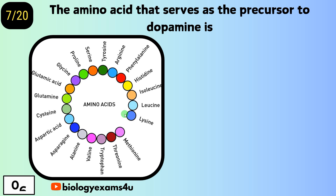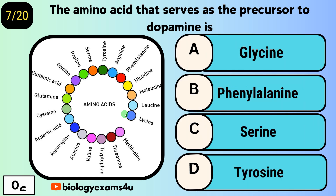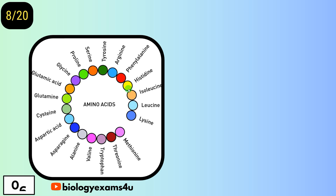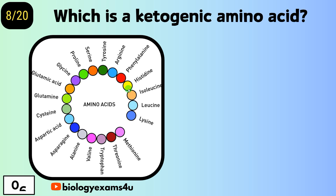Question number seven: the amino acid that serves as a precursor to dopamine is — option A, glycine; option B, phenylalanine; option C, serine; option D, tyrosine. The answer is tyrosine, which is a precursor of dopamine.